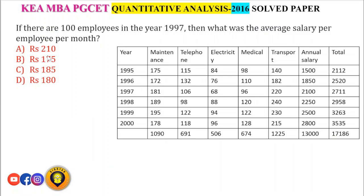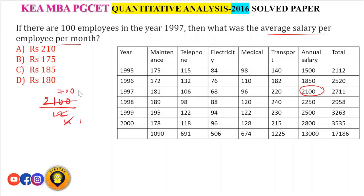If there are 100 employees in 1997, what was the average salary per employee per month? In 1997, annual salary = 2100. Average annual salary per employee = 2100. To find average monthly salary, divide by 12: 2100 / 12 = 175. So the answer is 175.